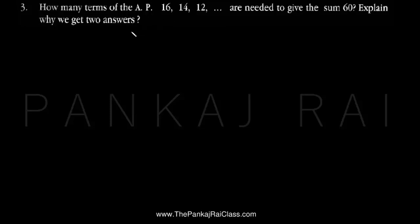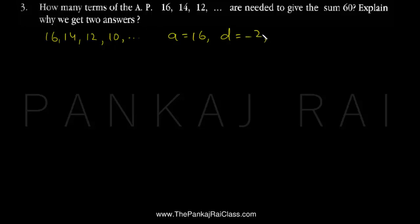So we are having the AP which is 16, 14, 12, 10 and so on. Here we can see that the first term a is 16, the common difference d is 14 minus 16 which is minus 2, and we have also been given that the sum of this AP has to be 60. So when Sn, the sum of first n terms, is 60, we have to find how many terms there are.